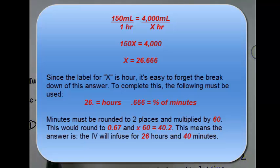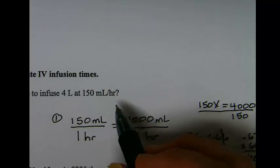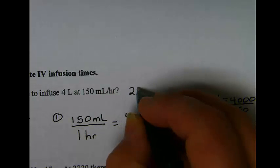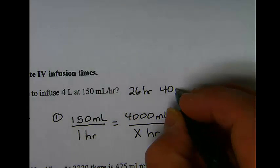So the total infusion time for 4 liters of fluid, if 150 milliliters per hour is going in, is 26 hours and 40 minutes.